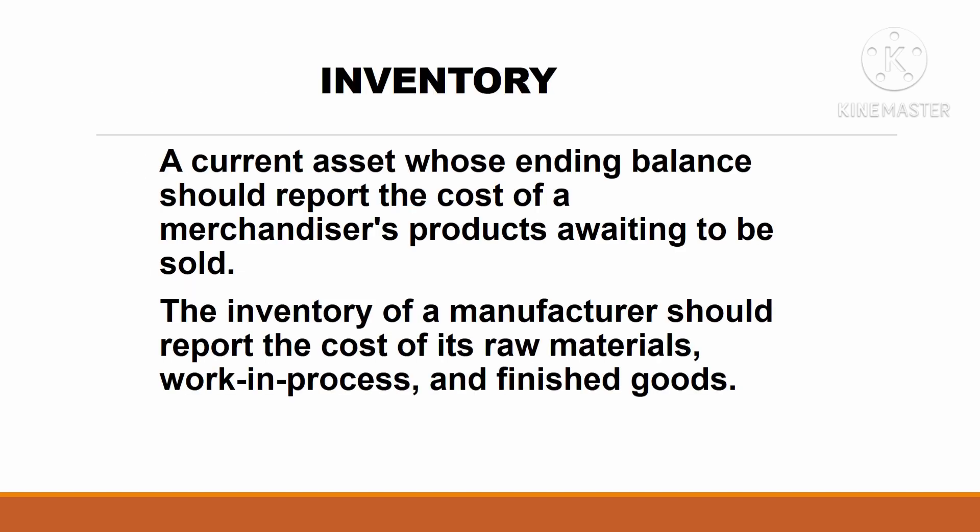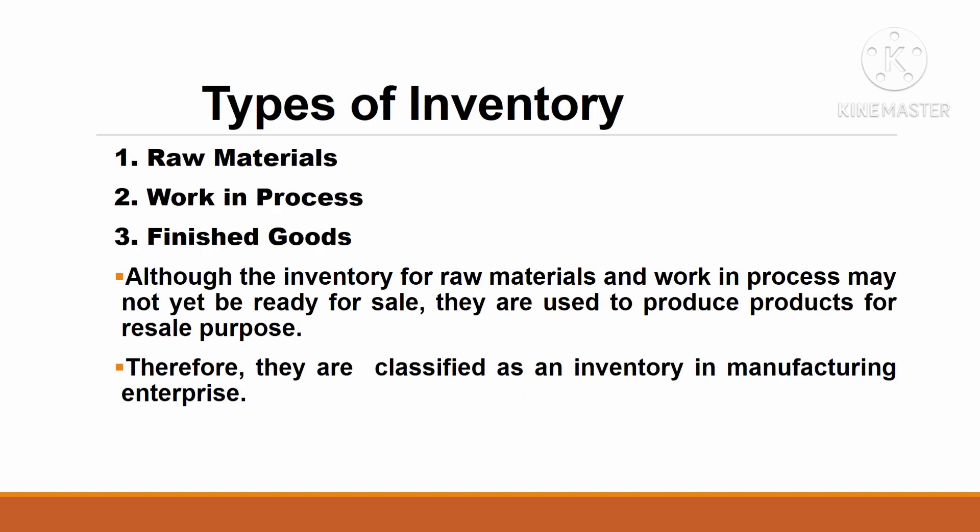The definition of inventory: inventory is a current asset whose ending balance should report the cost of merchandise — products awaiting to be sold. The inventory of a manufacturer should report the cost of its raw materials, work in process, and finished goods. There are three types of inventory: number one, raw materials; two, work in process; three, finished goods.